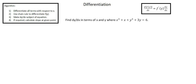This is an example of an implicit function. In an explicit function, the function is set with y as the subject, or can be manipulated so that y is the subject. In this case, we're not able to do that — we're dealing with an implicit function.